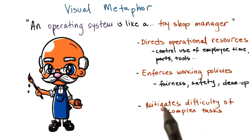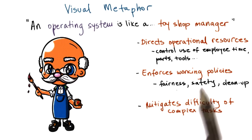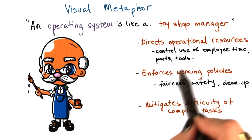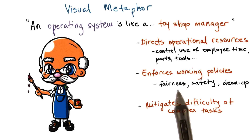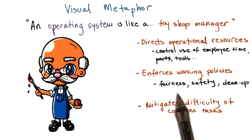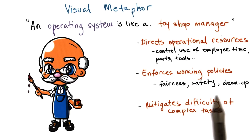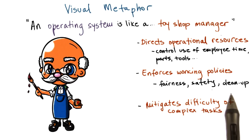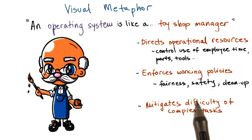For instance, how workers working on two different orders have to share one of the shared resources — shared parts and tools. Another example is policy regarding how to clean up after yourselves once a worker is done with processing a toy order.